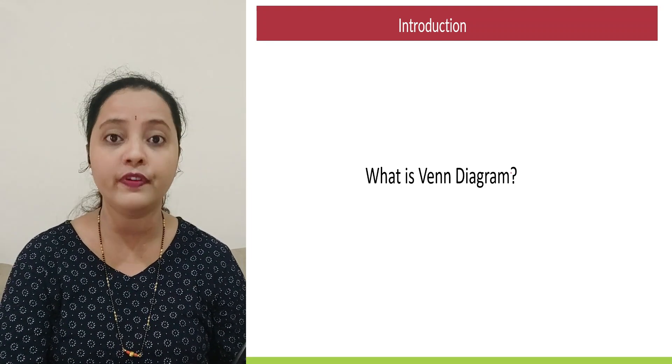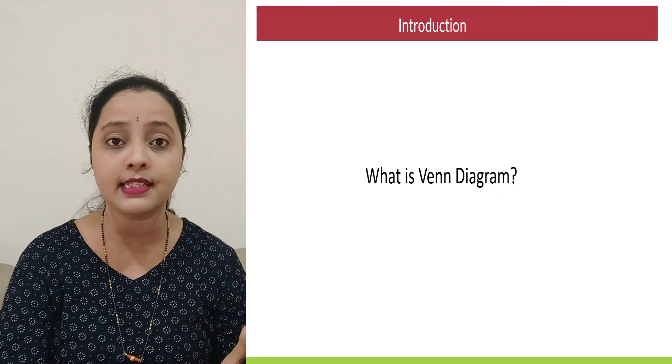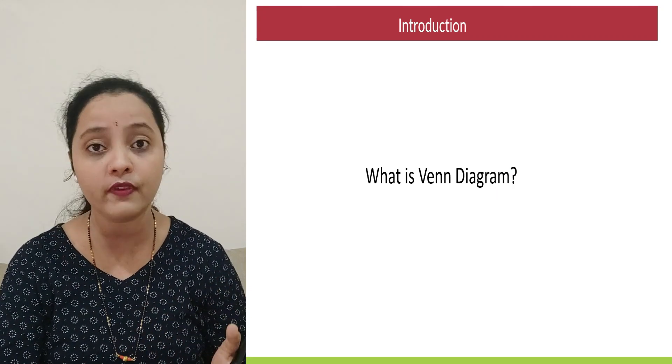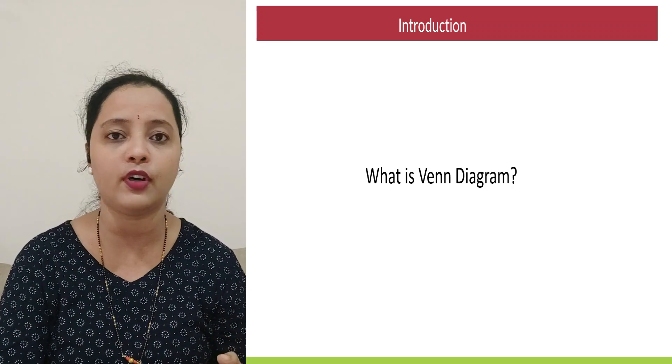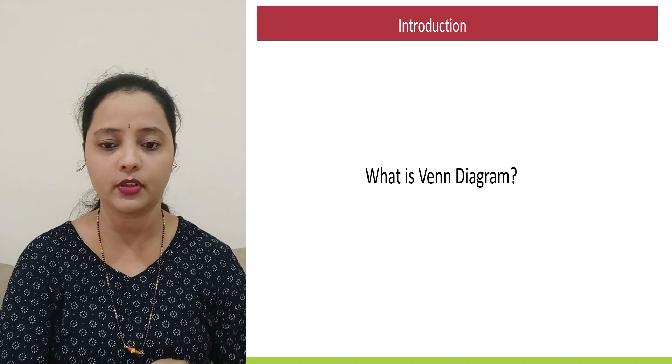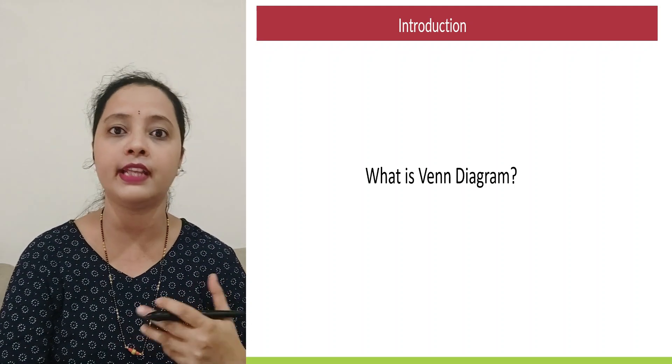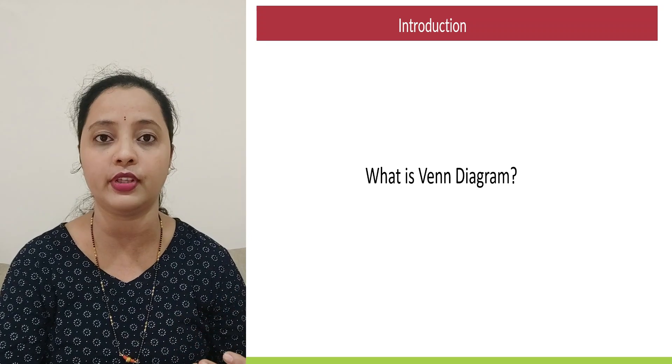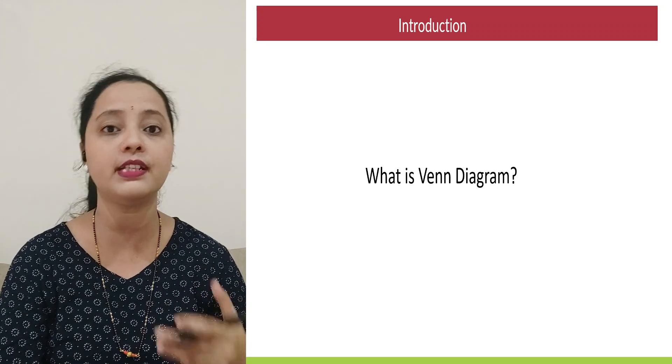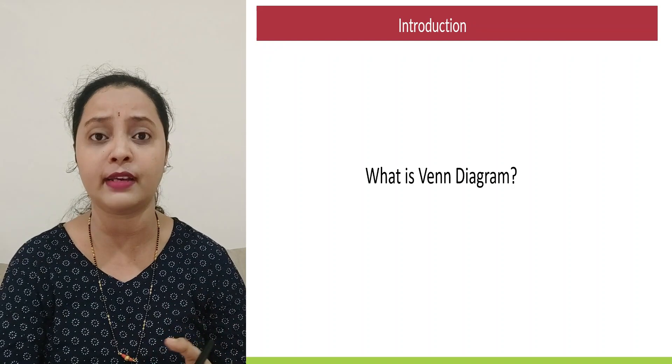Basically, what do we do in Venn Diagram? It's kind of like set theory, but the way of solving the question is not using any formula or stuff. It's basically a diagrammatic question that we'll have to decode. So Venn Diagram is basically either they will give you certain elements or components and you will have to represent those components in terms of a diagram.